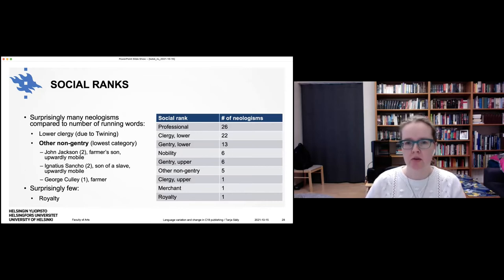All right. But looking at social ranks. So kind of abstracting away from the individuals now and going to the social groups. So the ones that use surprisingly many new words compared to the number of running words we have from them. Well, there's lower clergy, but that's due to Thomas Twining, basically. But then other non-gentry, the lowest category of all. And there we have John Jackson, who was already mentioned. He was a farmer's son. He was upwardly mobile. Then we have Ignatius Sancho, who was the son of a slave. And again, upwardly mobile. And then we have George Culley, who was a farmer. Well, he was more of a gentleman farmer, maybe. But anyway, really working in agriculture with his hands in the dirt and growing or sort of breeding animals and stuff like that. And surprisingly few compared to the amount of data we have from them are royalty. So maybe they are kind of conservative language users in this respect.